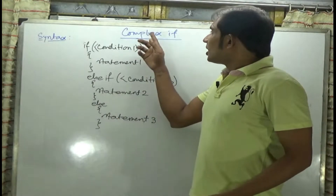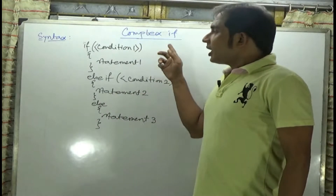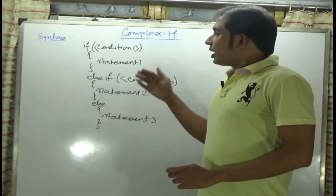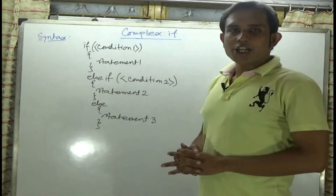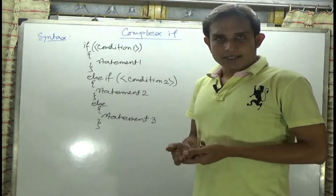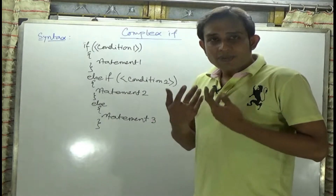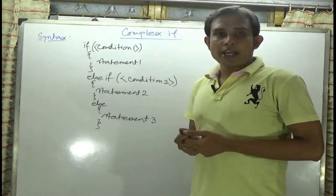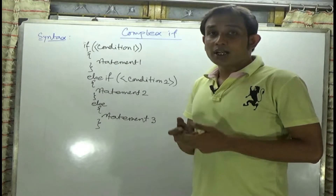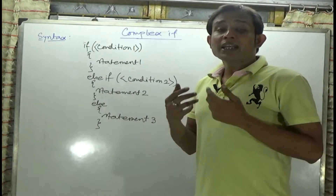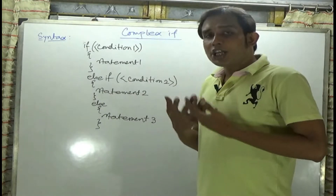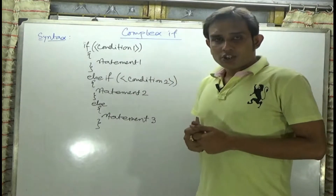Now, I come to the point of the complex if statement. This is the syntax of the complex if statement. The complex if statement is basically needed whenever we are going to check more than two conditions. If we wish to check only two conditions, then we always use the compound if statement. But if we are going to check more than two conditions, then we need the complex if statement.